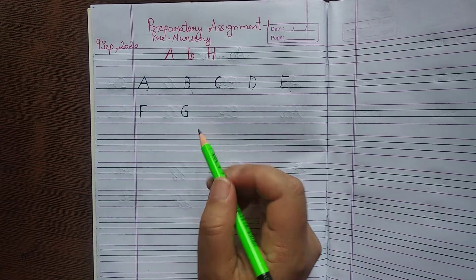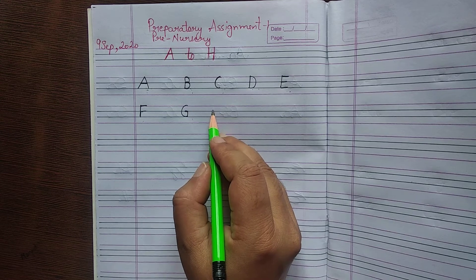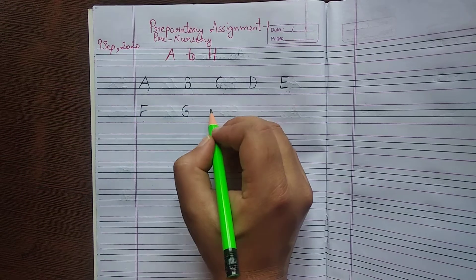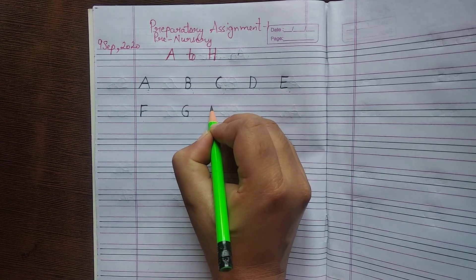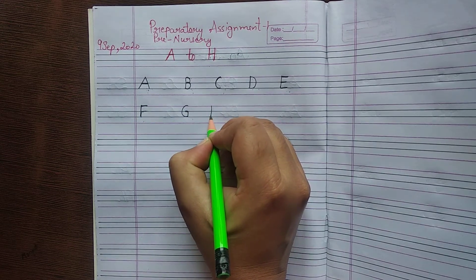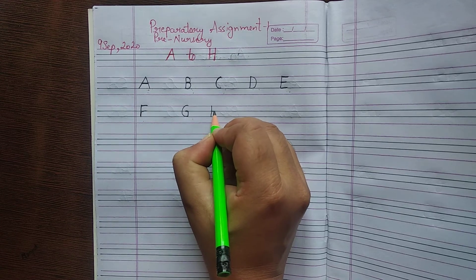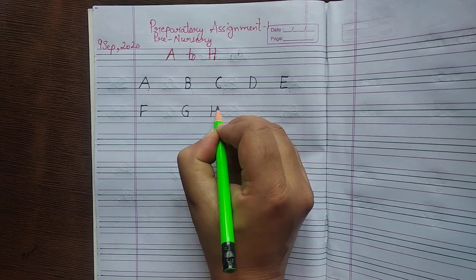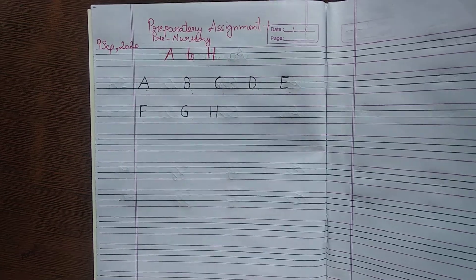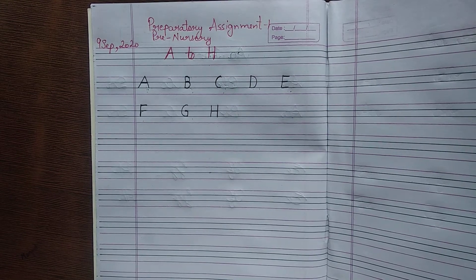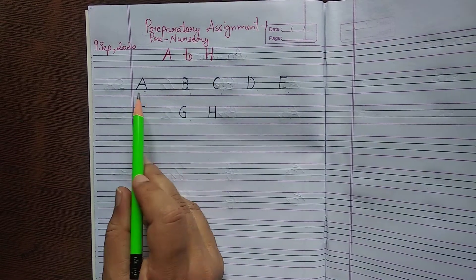After G, what comes next? H. H for horse. First, standing line. Make one like this, then sleeping line, then make one like this again. Okay students, are you getting it? Okay?